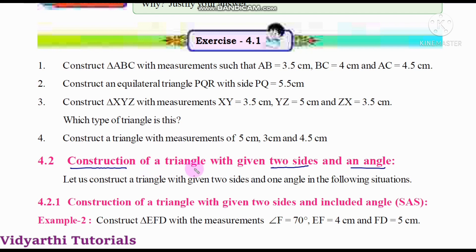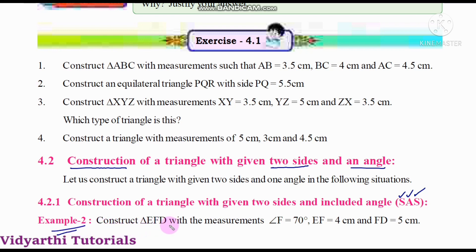Construction of a triangle with given two sides and an angle. Let us construct a triangle with given two sides and one angle in the following situations. Here we have an example: construct triangle EFG with measurements — angle F is equal to 70 degrees, EF is equal to 4 centimeters, and FD is equal to 5 centimeters.